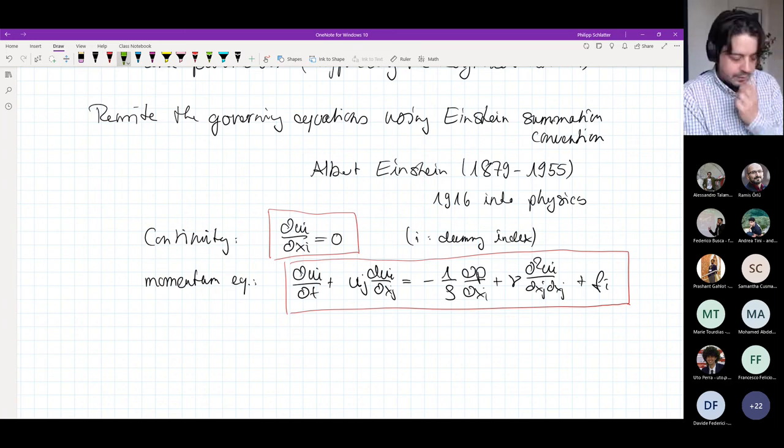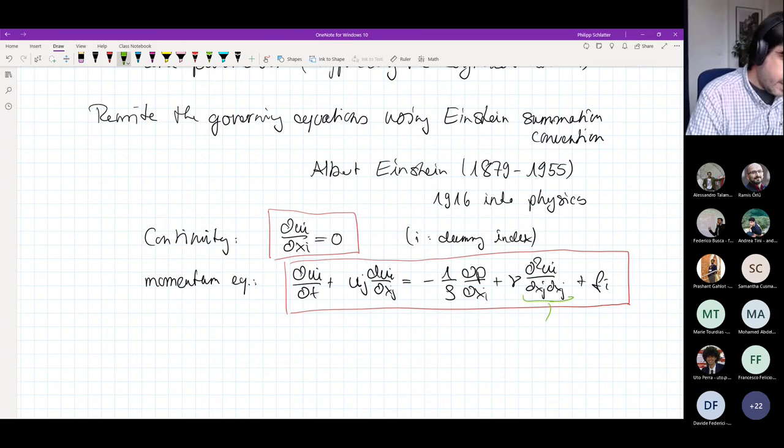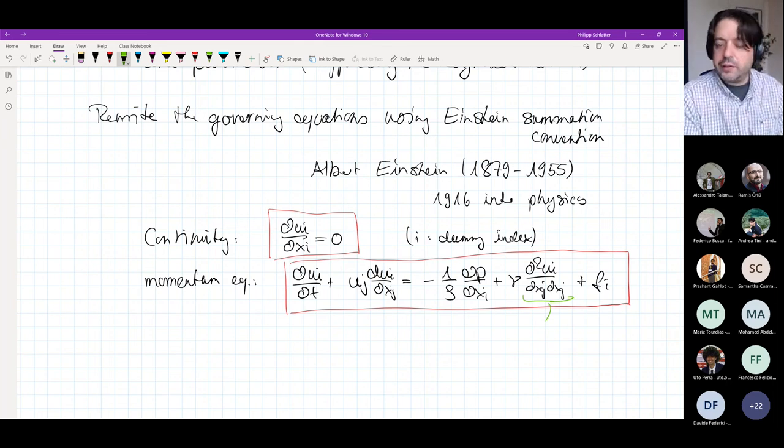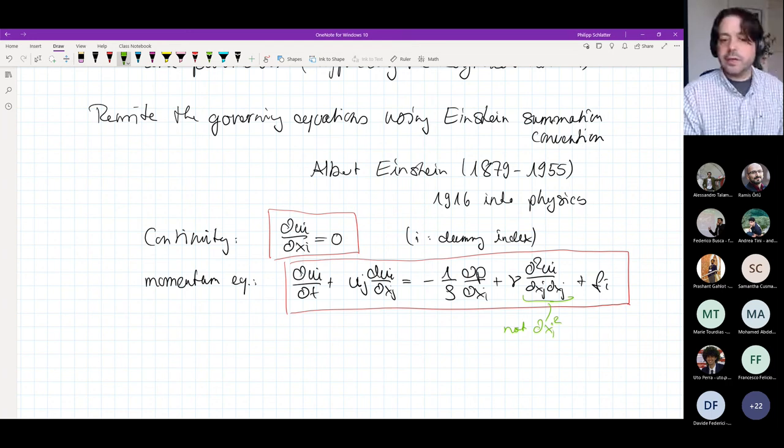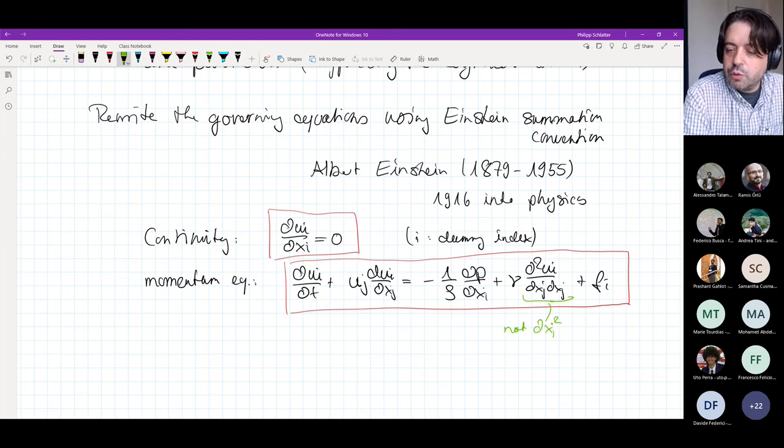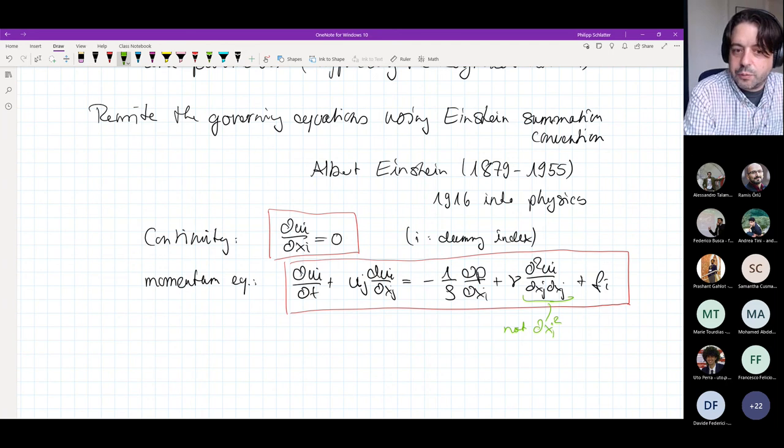Just one last comment before we have a short break. Here, I wrote dxj times dxj, and the way that I wrote this was in such a way that the two indices j are really exposed that you could see these two indices j. That makes them to be the dummy index of this term, and we would need to do our summation over repeated indices over this j here. That's my preferred way of writing it. I would suggest to you to not write this term as dxj squared, because if you write it as dxj squared, you would not see these repeated indices and you would not immediately see that you would need to do a summation.